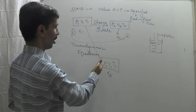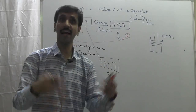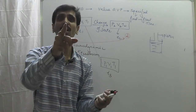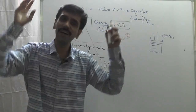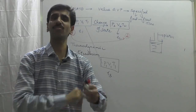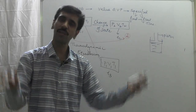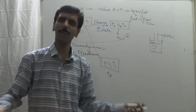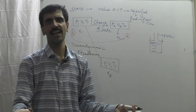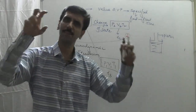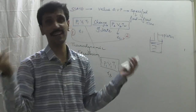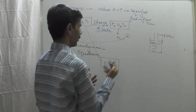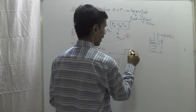The values here are pressure, volume, temperature, and also concentration. It is not always possible to keep all parameters constant — it depends upon the conditions. Whichever parameter is kept constant, accordingly we get various types of equilibrium.